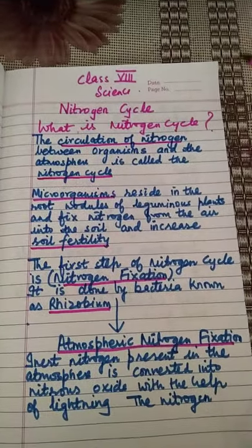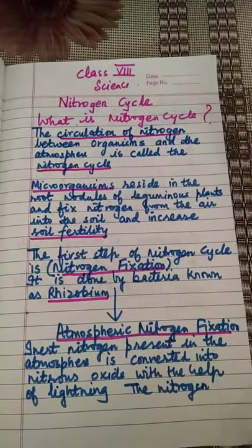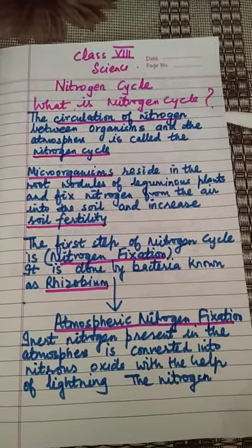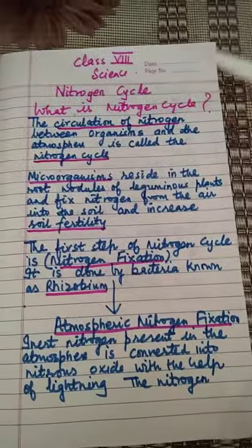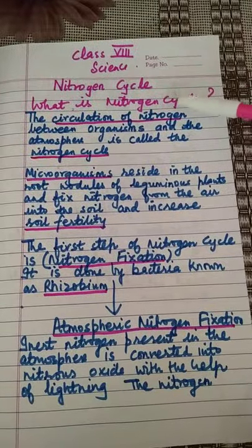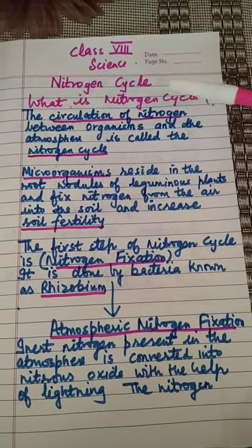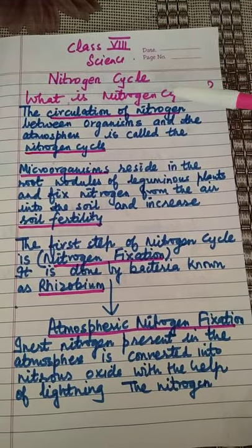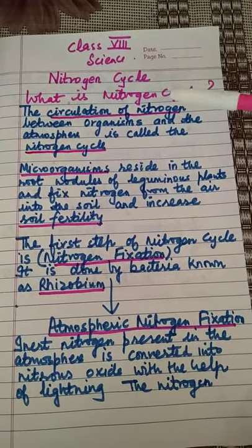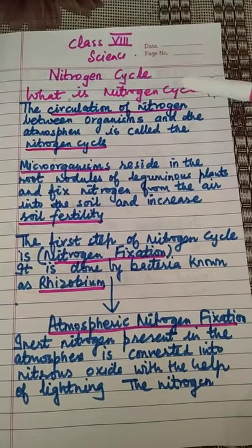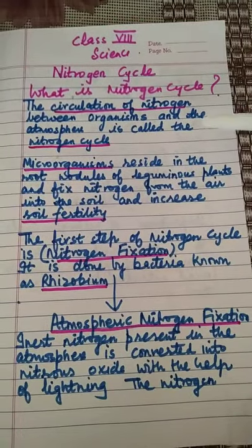Children, let us understand more about the nitrogen cycle. The circulation of nitrogen between organisms and the atmosphere is called the nitrogen cycle.